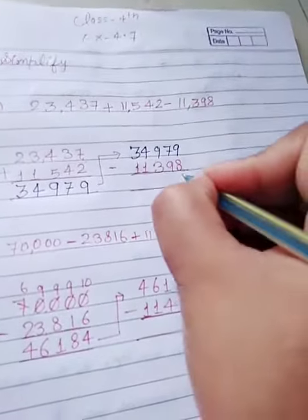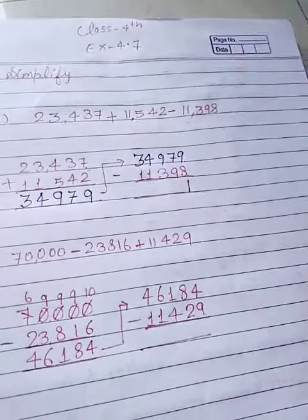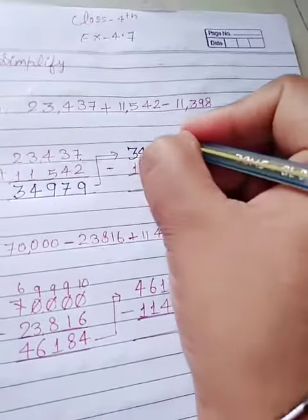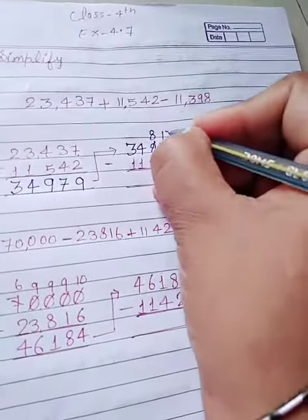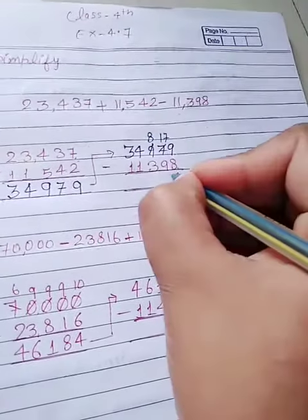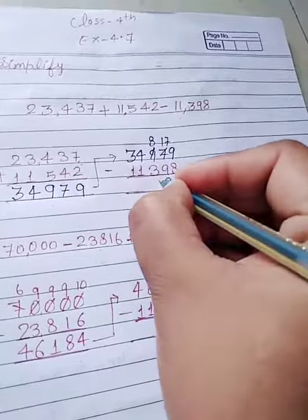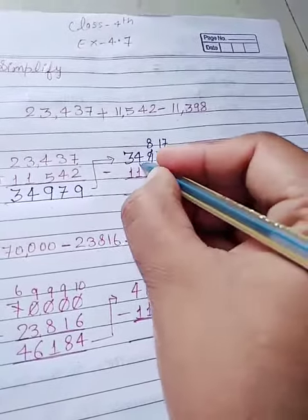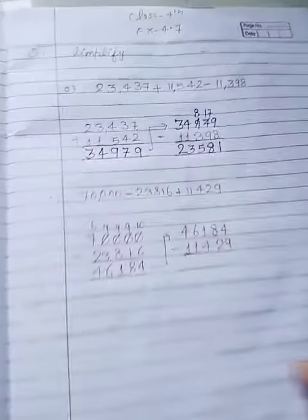We minus. 9 minus 8, 1. For 7 we need to borrow from 9. Left 8 and 17. 7 changes into 17. 17 में से 9 माइनस किया 8, 8 में से 3 माइनस किया 5, 4 में से 1 माइनस किया 3 and 2. So dear students,